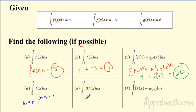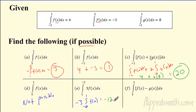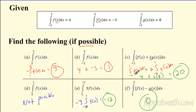What about from 0 to 1? I don't have enough information — not possible. I know what's happening from negative 2 to 1 and from 1 to 5, but I don't know what's going on from 0 to 1. Then there's one with a constant 3 — pull it out front — but the boundaries are flipped! Negative 2 should be on the bottom and 1 on top. Flipping them makes it negative, so it's negative 3 times 4, which is negative 12. And if both boundaries are the same — like 5 to 5 — that's the zero property: you get 0.